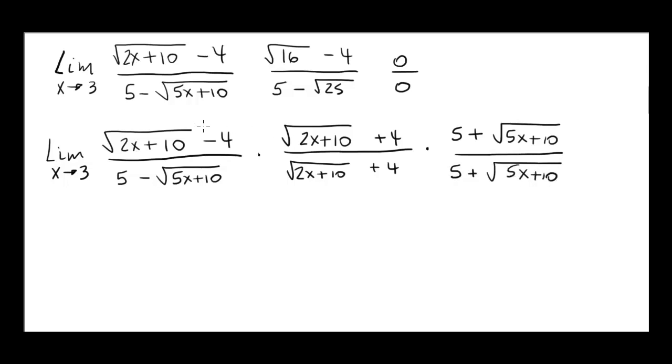Now, we are going to multiply the numerator, the original numerator by its conjugate and the original denominator by its conjugate and the remaining two pieces will just go along for the ride. Once we cancel the cause of 0 over 0 or eliminate it we will be able to compute the limit.